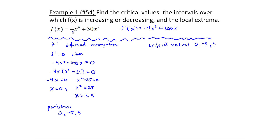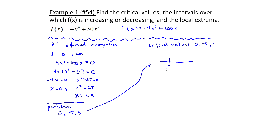The next step is to find the intervals over which f of x is increasing or decreasing. I take my partition numbers — that's why they're called partition numbers — to partition up a number line. I put them in order: minus five, then zero, then five. I want to understand when f prime is positive or negative, since when f prime is positive the function is increasing, and when f prime is negative the function is decreasing.